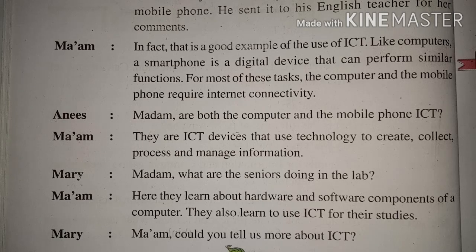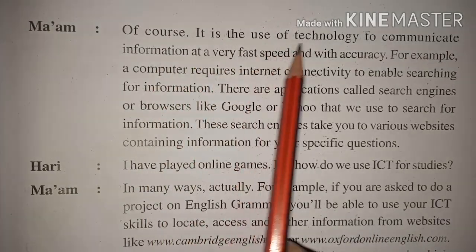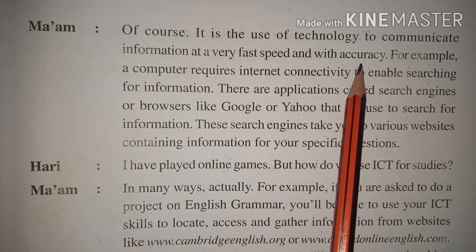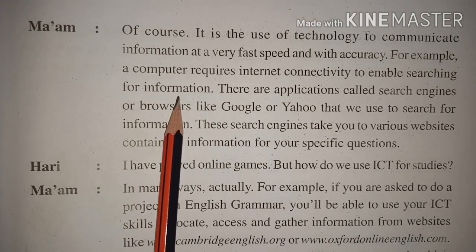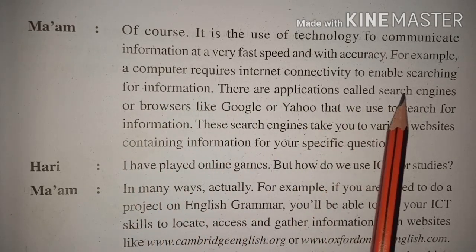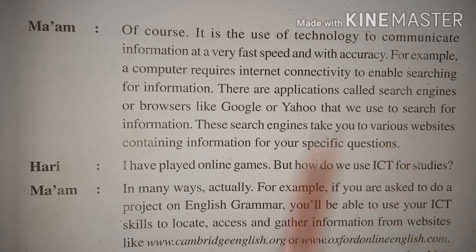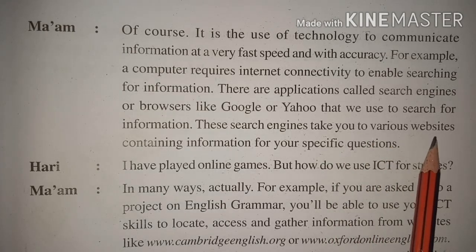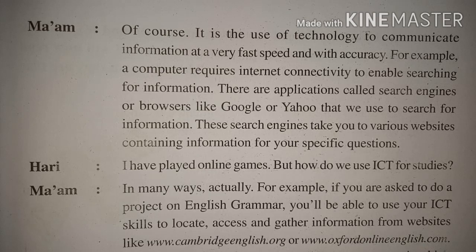Would you tell us more about ICT? Of course. ICT is the use of technology to communicate information at a very fast speed and with accuracy. A computer requires internet connectivity to enable searching for information. There are applications called search engines or browsers like Google or Yahoo that we use to search for information. These search engines take you to various websites containing information for your specific questions.